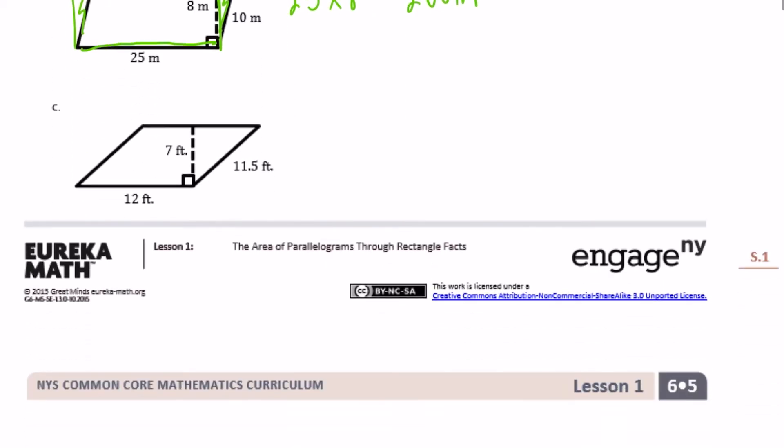The next one, same thing. If I cut this piece off, I can move it over here, which gives me the rectangle. So now base times height equals area. The base is 12, the height is 7. Careful, don't use the 11 and a half. So 12 times 7 is equal to 84, and our unit is feet squared.